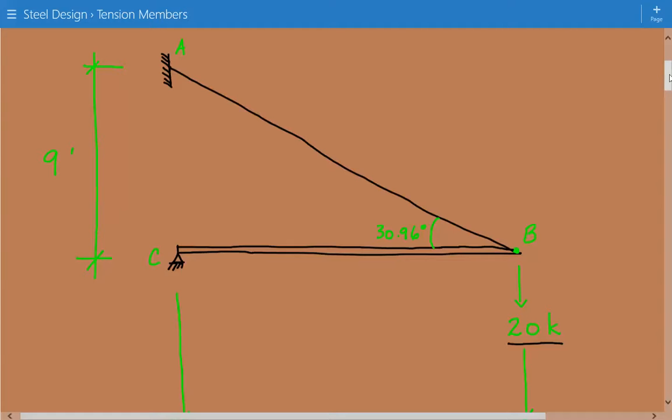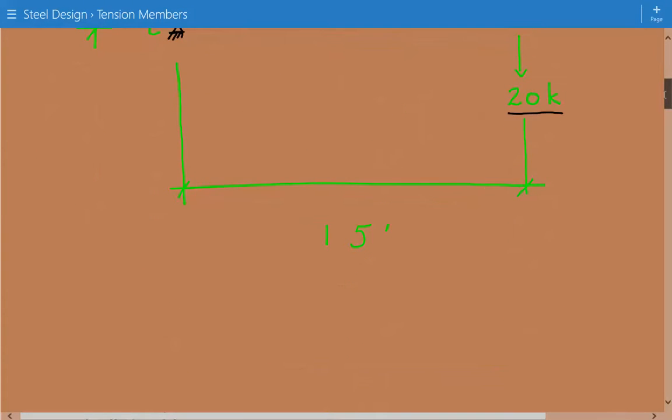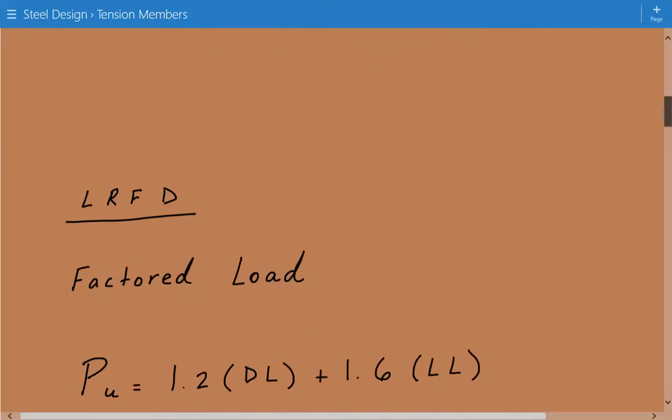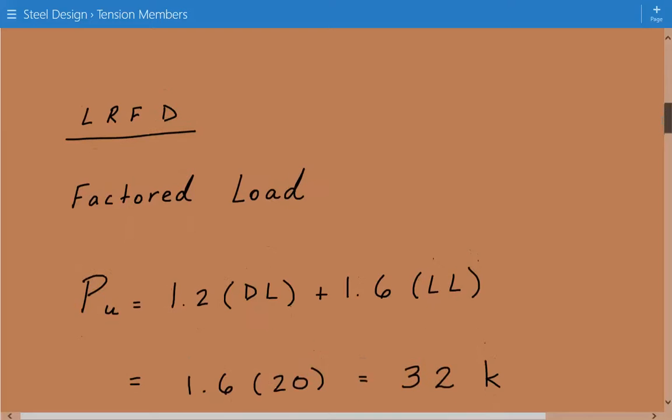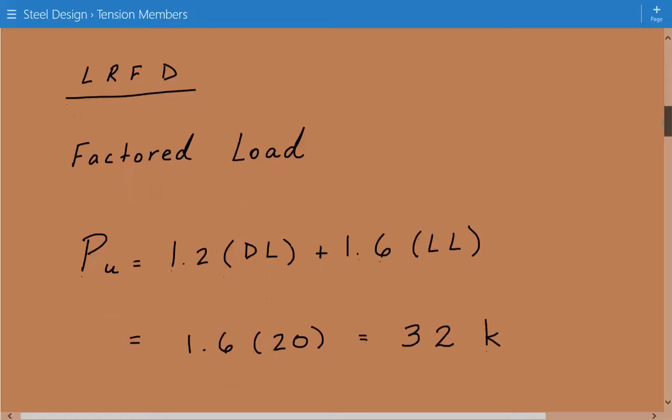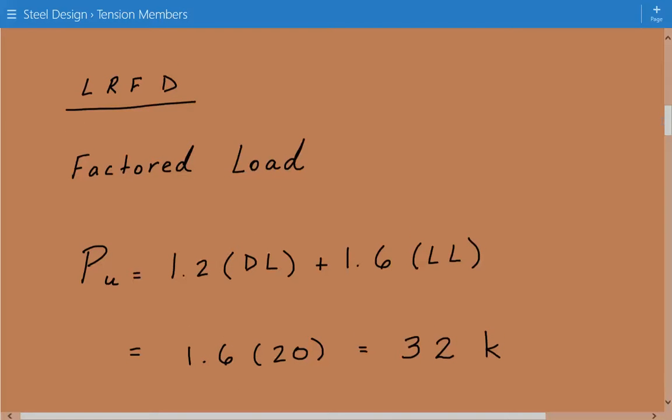And now coming back to our threaded rod problem. So we're going to use the LRFD approach first. So we need to calculate the factored load based on ASCE7 load combinations. And this is the governing load combination. It's load combination number two.